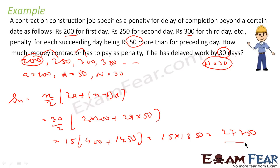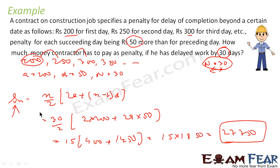So the total penalty is 27,750 rupees. On the first day he pays 200, then 250, then 300, and it keeps going on. The total penalty over 30 days is the sum of all daily penalties. This AP has A=200, D=50, N=30, and the sum is 27,750.